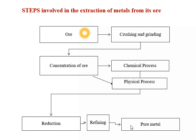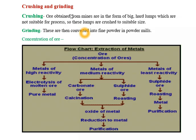It is about 99% pure metal. So let's see concentration of ore by physical process. First we will see what is crushing and grinding. The ore obtained from the mine is in big form — hard lumps which are not suitable for further processing. So these lumps are crushed to a suitable size, then converted into fine powder in powder mills. After crushing and grinding, concentration of ore is done by physical and chemical process.